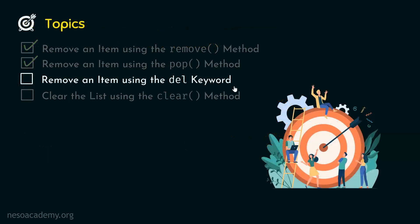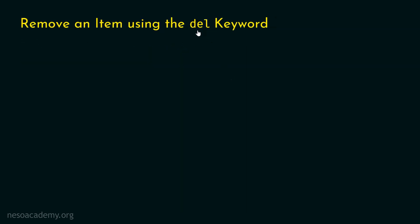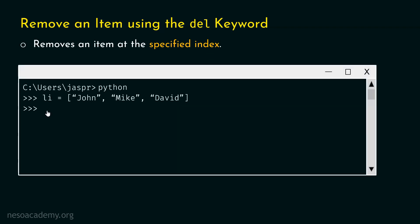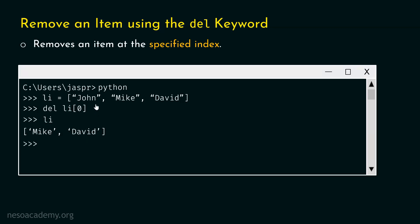Now let's move on to removing an item using the del keyword. The del keyword can also be used to remove an item at the specified index. Let's open the command prompt and consider the same example list. This time, we are interested in deleting the first item using the del keyword. We type del li with brackets zero to specify the index. Let's hit enter and type li to check — we will get the list where john is not available.